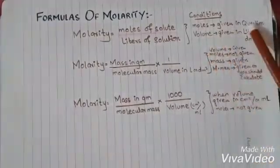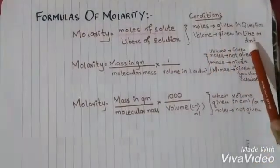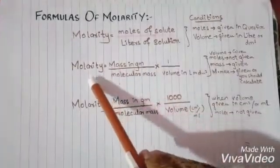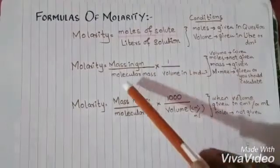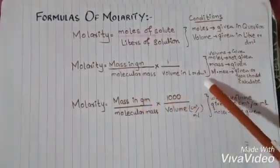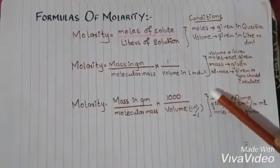Now the second formula of molarity is mass in grams per molecular mass per volume in liters or dm cube. The condition here is that volume is given in liters or dm cube.